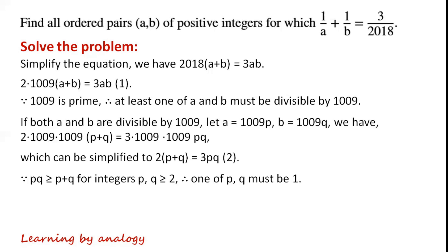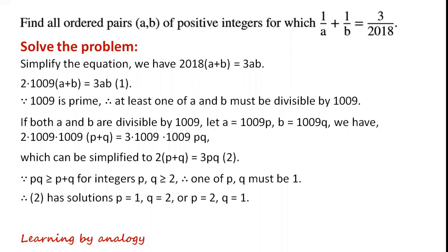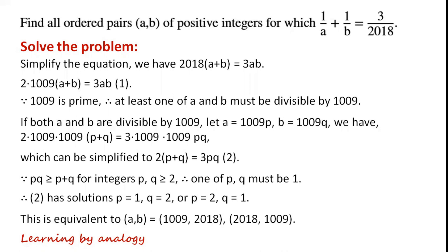Since pq ≥ p + q for integers p, q ≥ 2, one of p or q must equal 1. So equation 2 has solutions p=1, q=2 or p=2, q=1. This gives (A,B) = (1009, 2018) or (2018, 1009).